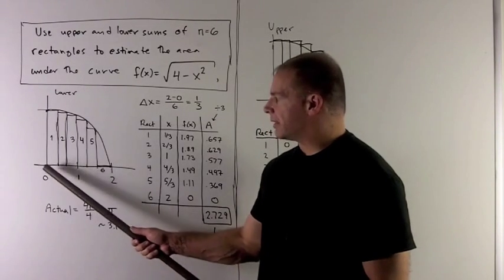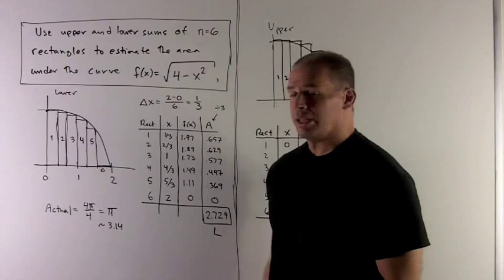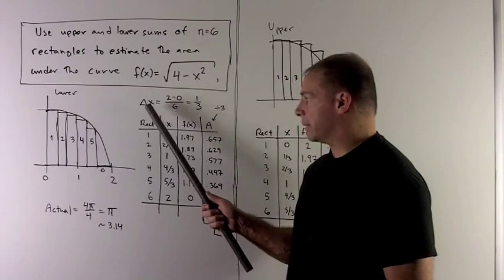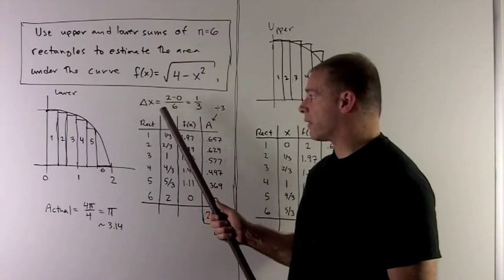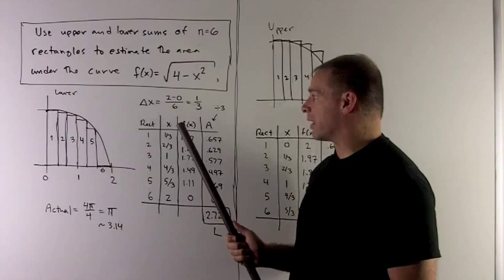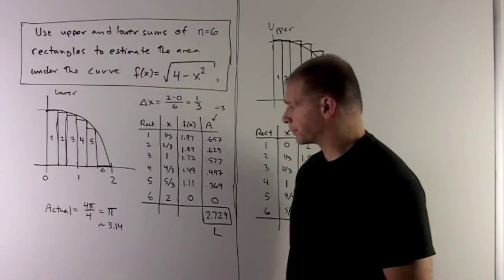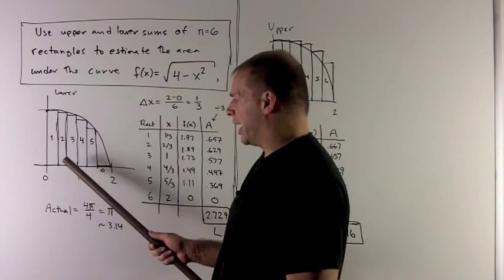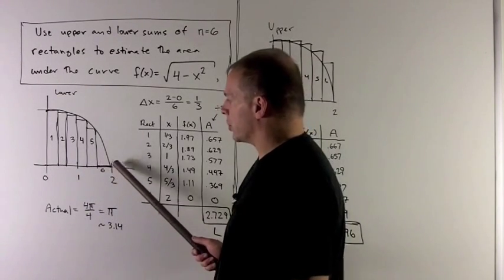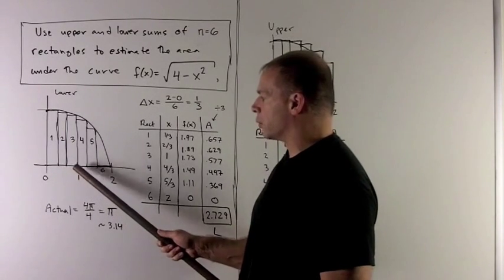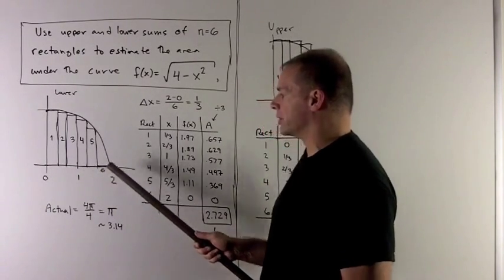So what we'll do is we'll subdivide our region from 0 to 2 into 6 pieces of equal length. So that means we'll have a base of each of our rectangles equal to the length of the interval divided by the number of rectangles, which is 1 third. And then I'm just going to mark off where each edge of these rectangles shows up. So that'll be 0, 1 third, 2 thirds, 1, 4 thirds, 5 thirds, and 2.